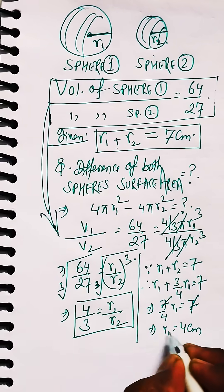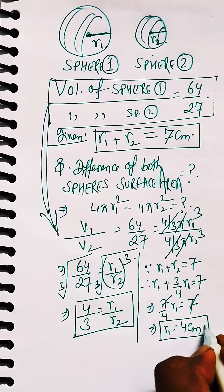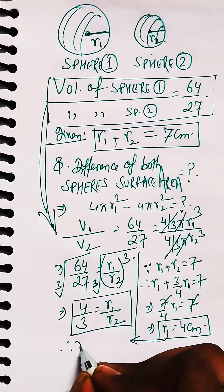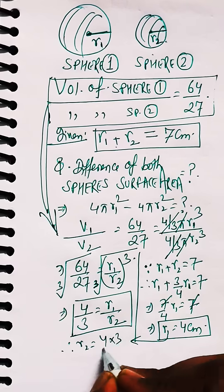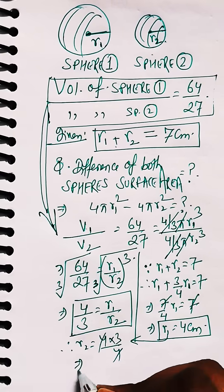So here r1 is calculated as equal to 4 centimeters. So radius of the first sphere is calculated as 4 cm and putting up the value we get r2 as 3.